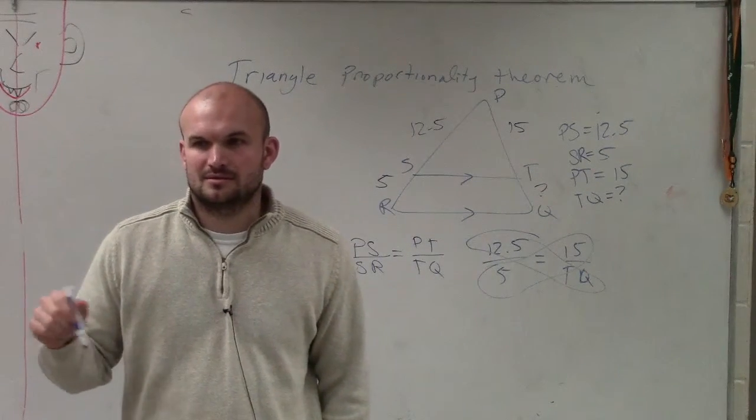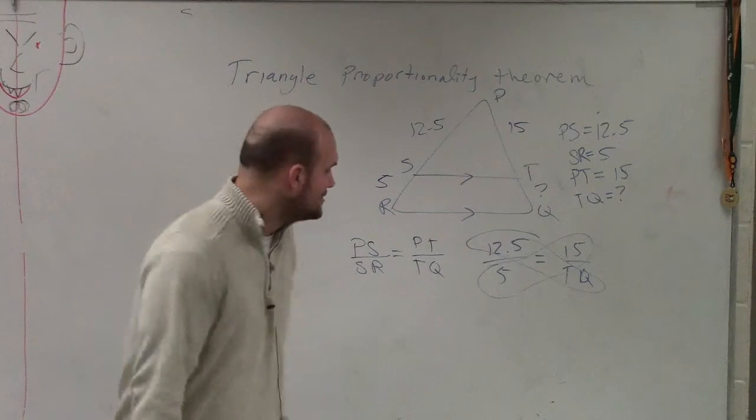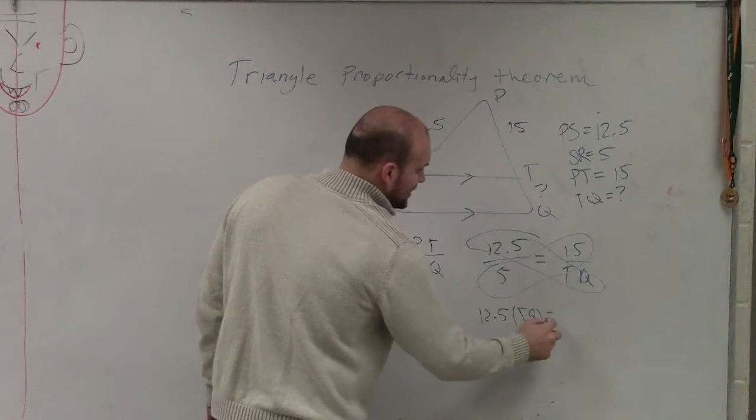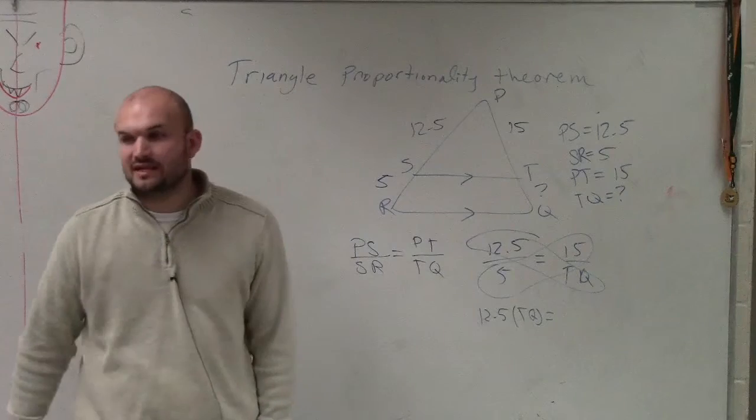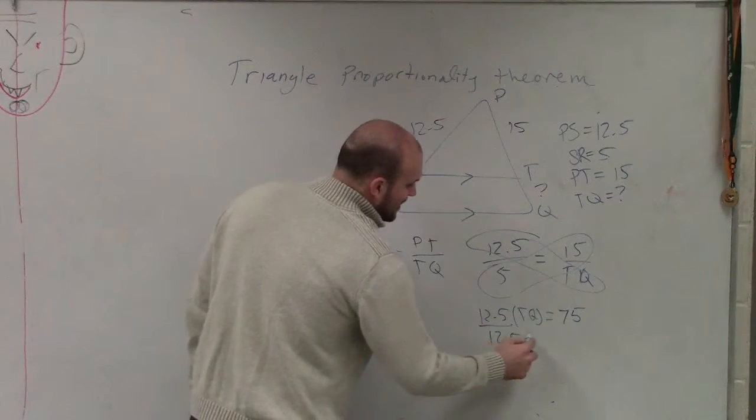You mean cross-multiply? Right. So now I have 12.5 times TQ is equal to 5 times 15, which is going to be 75. Then I divide by 12.5.